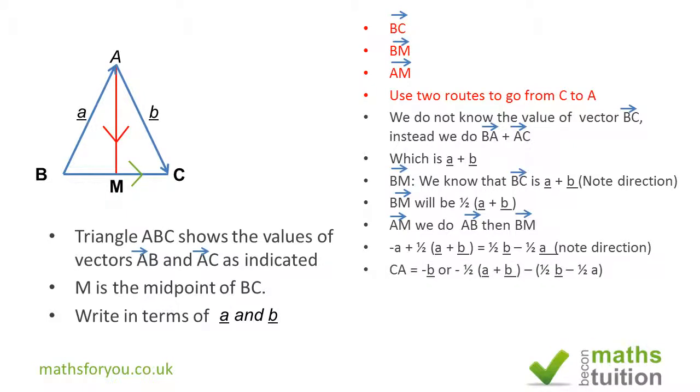Now for CA, I can go from C to A directly because I know what the value is, and because I'm going against the grain, it's going to be minus b. Or I could go against the grain from C to M to A. Now from C to M will be minus ½(a + b) because C to M is the same as B to M—half—because M bisects the line BC. So M is the midpoint, so B to M is the same as M to C. M to C is ½(a + b), and because we're going against the grain, that becomes minus ½(a + b).